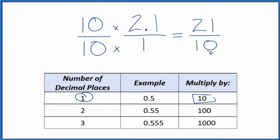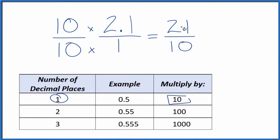Let's convert this to a mixed fraction. 10 goes into 21 2 times with 1 left over. So we get 2 and 1 tenth. 10 times 2 is 20, plus 1, 21. So 21 over 10.